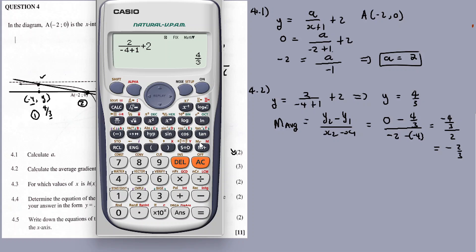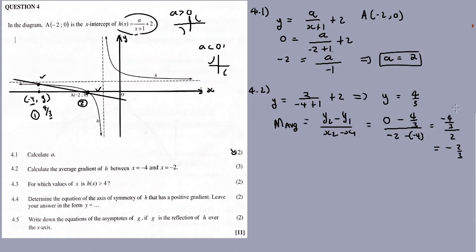It's negative. It's negative 2 over 3. The answer on the calculator wasn't negative but it was positive before, so let's confirm — this is the average gradient: negative 2 over 3.